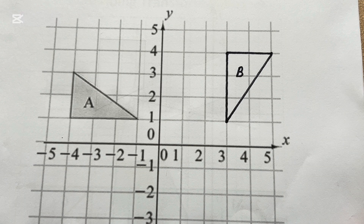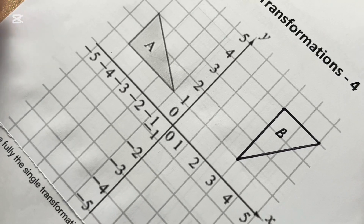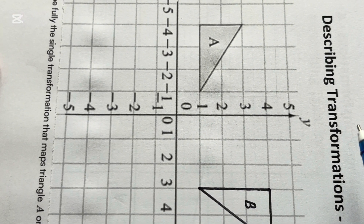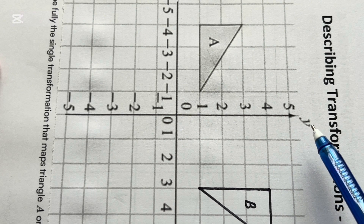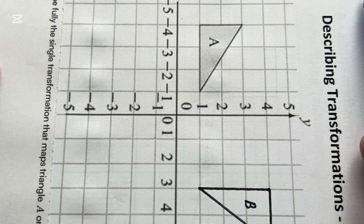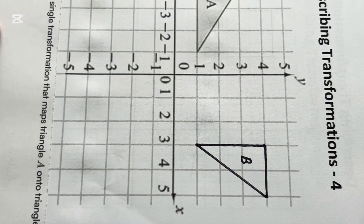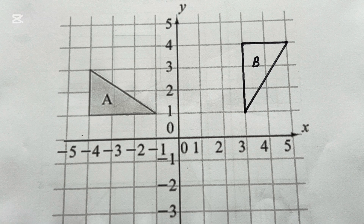I'm just rotating this physically. Look at my y-axis now — it is in place of the x-axis, and the x-axis has come down in place of the y-axis. So we have found out the type of rotation, the angle of rotation is 90 degrees, and the direction is clockwise.